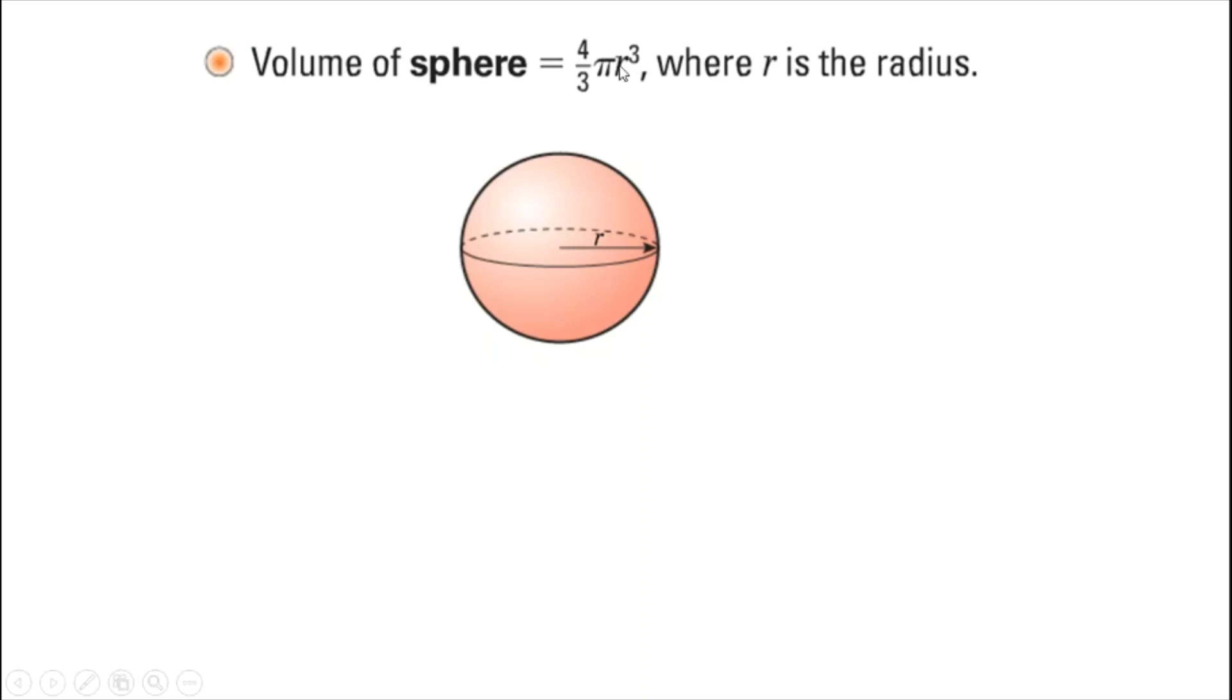The formula is given in GCSE exams, so you don't need to remember this. All you will need, if you're asked to find the volume, is to work out what r is, which will not be given in the diagram, substitute it in, and put it through a calculator. That's normally two marks. It's quite an easy two marks to get if you've practiced using the formula.